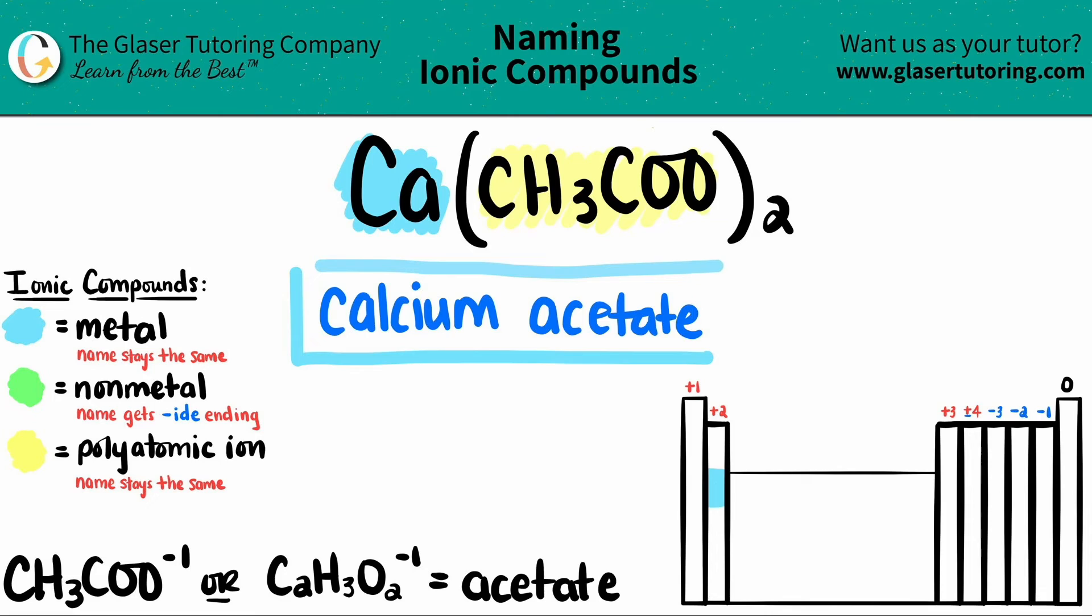So Ca(CH3COO)2 is calcium acetate. That's it.